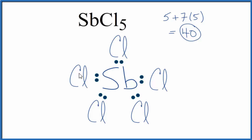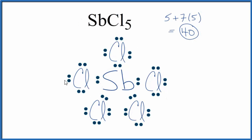Next, we'll complete the octets on these chlorines on the outside. At this point, we've used all 40 valence electrons. We said the antimony has more than 8, but that's okay. Each chlorine has an octet, 8 valence electrons.